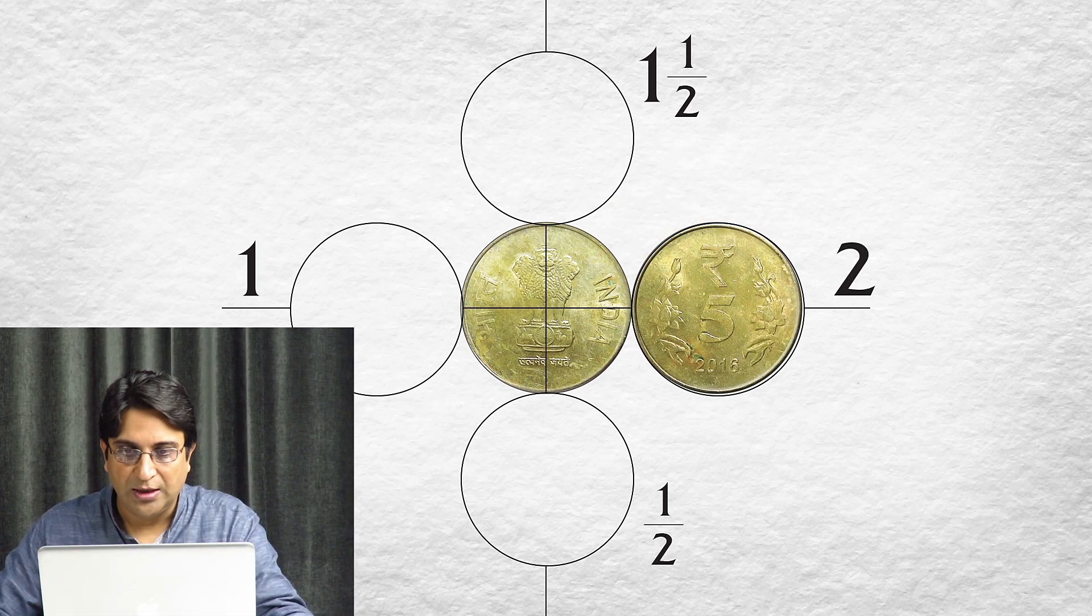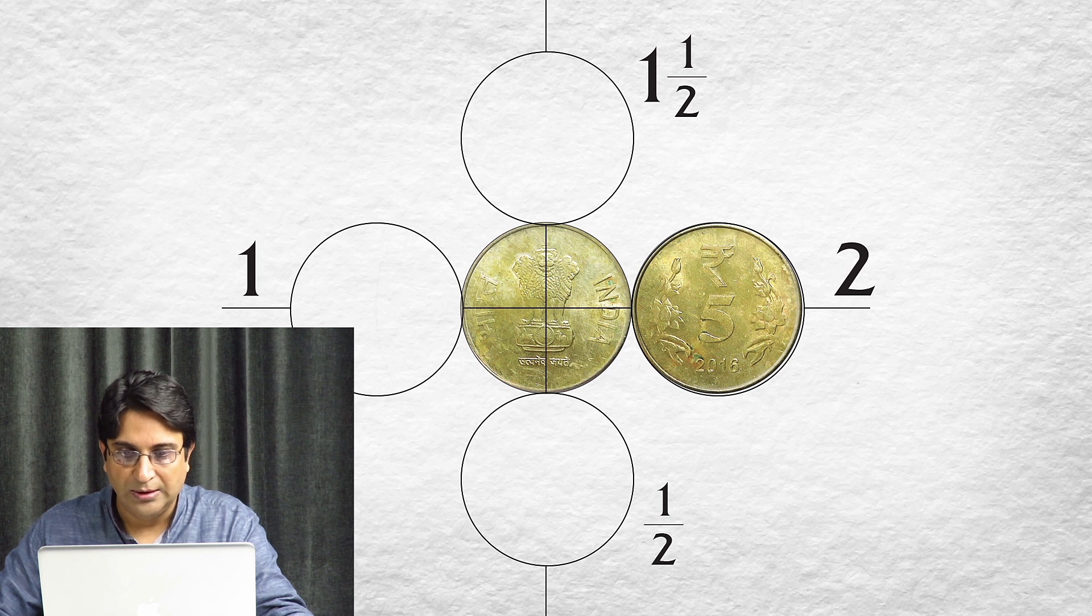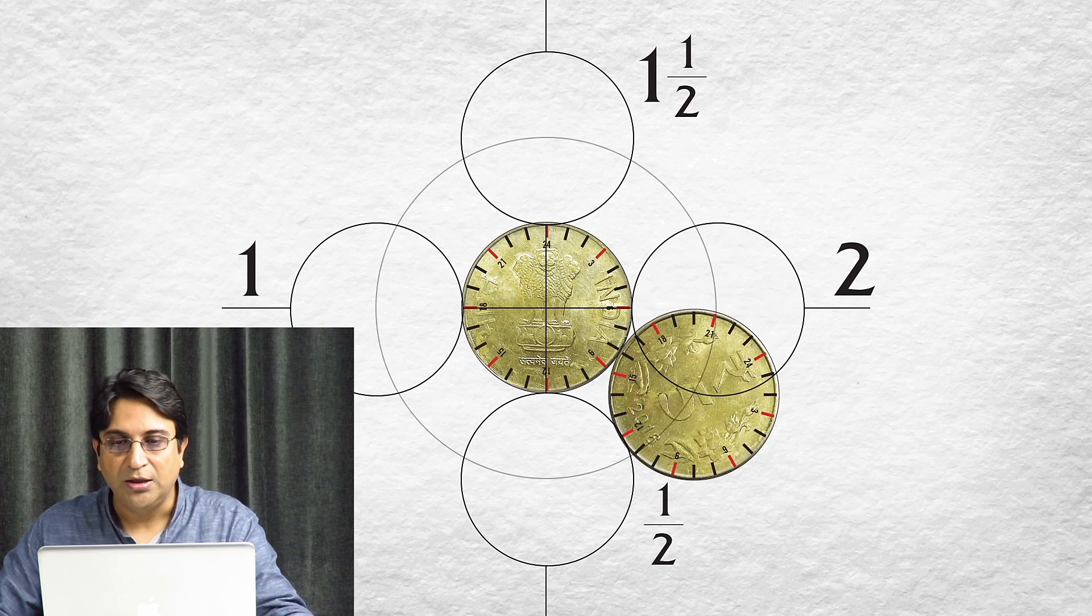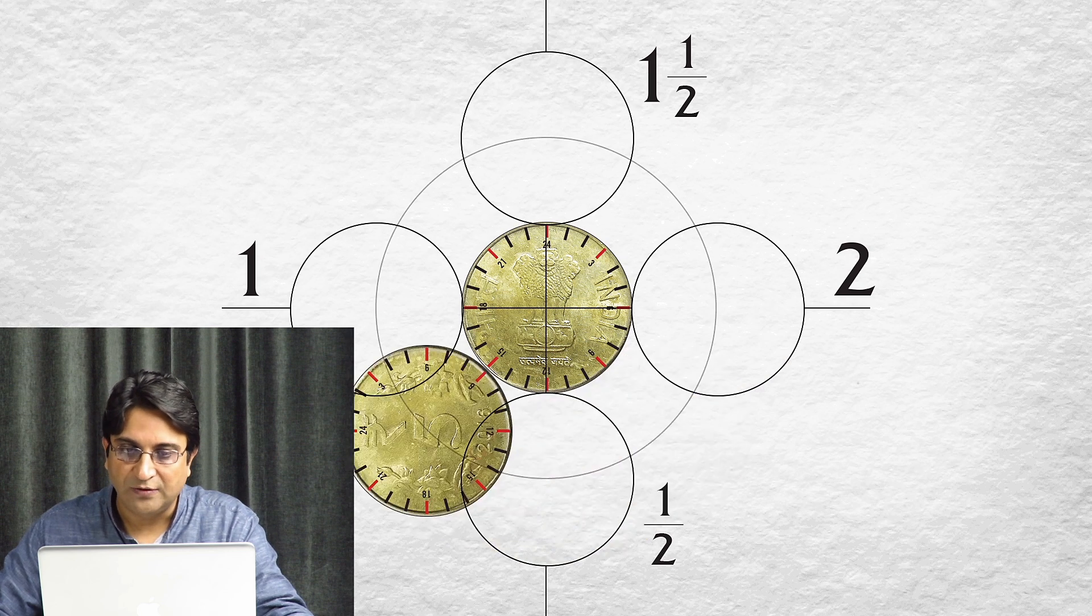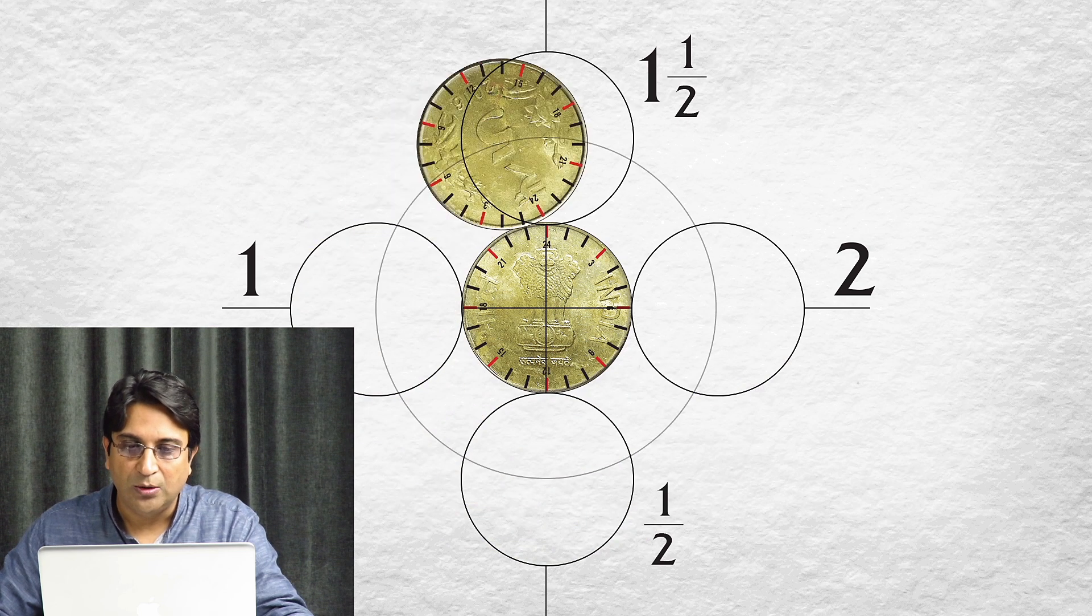Five is pointing upwards once more. Hence it has made two complete spins around itself as it goes around the inner coin once.